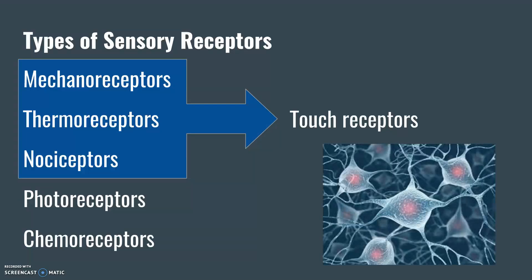Sensory receptors take in information from the world and transmit signals from neuron to neuron, all the way back to the brain. Each sensor might respond to different inputs, whether they're electromagnetic, mechanical, or chemical in nature, in order to get us information about the world so that we might survive and thrive in it.